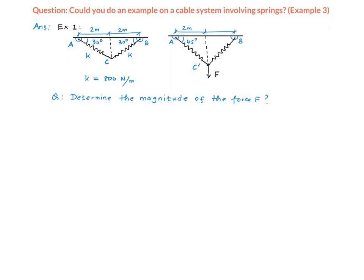One end of this spring is attached to point A on the ceiling, and one end of this spring is attached to point B on the ceiling. The other ends of these springs are attached to a common point C.